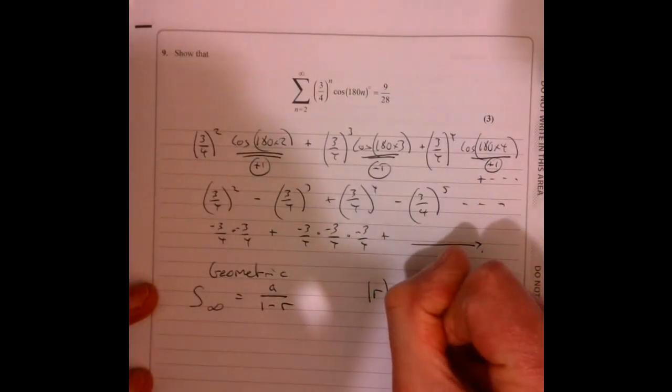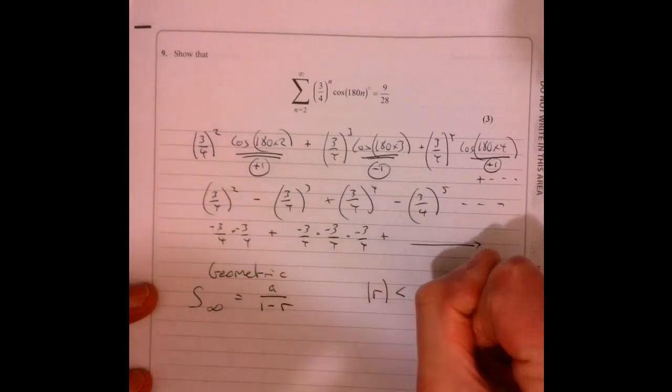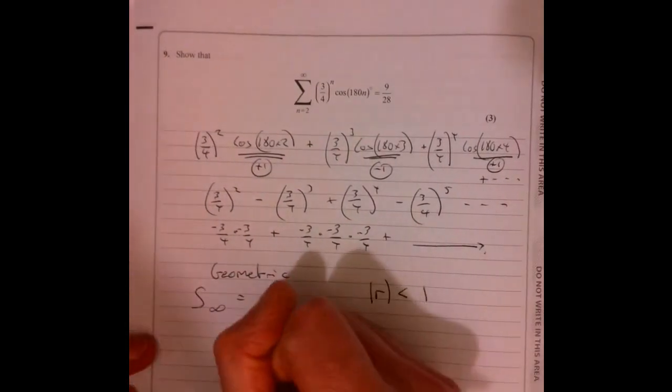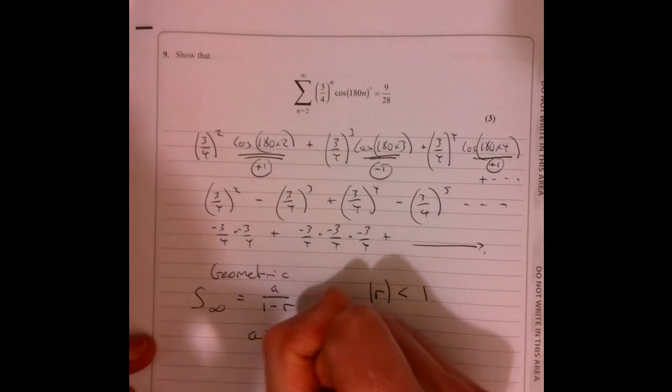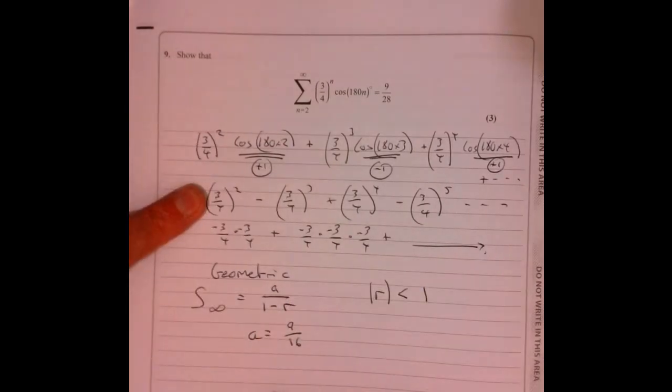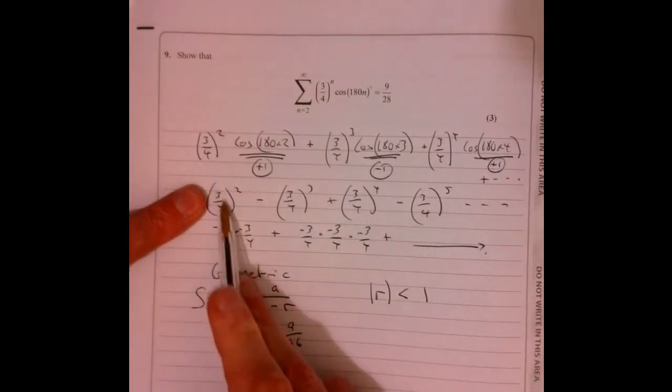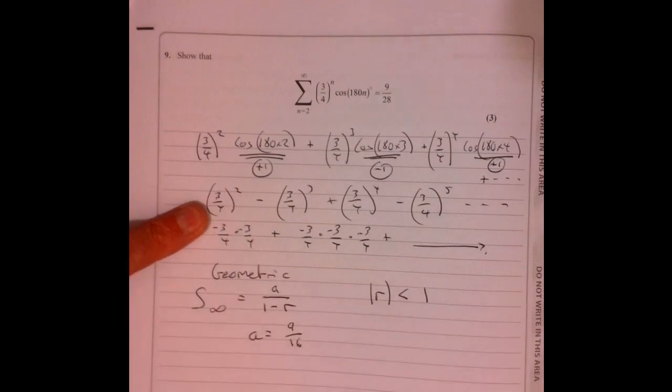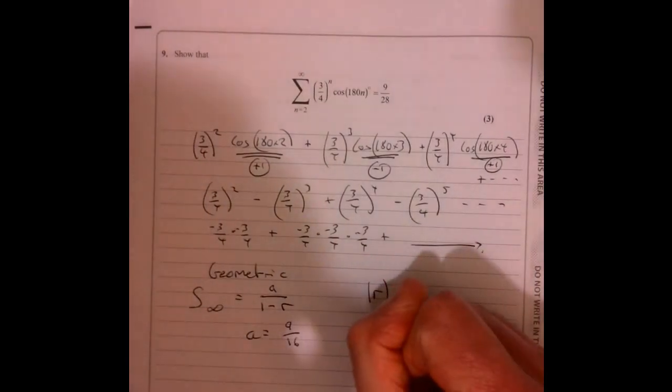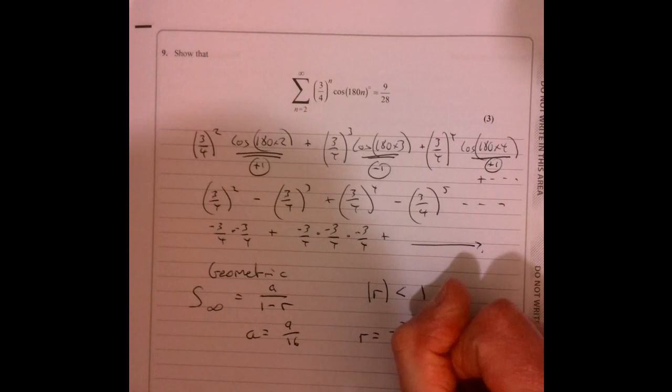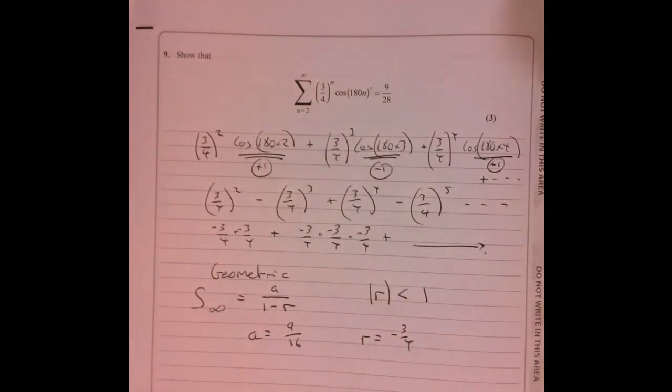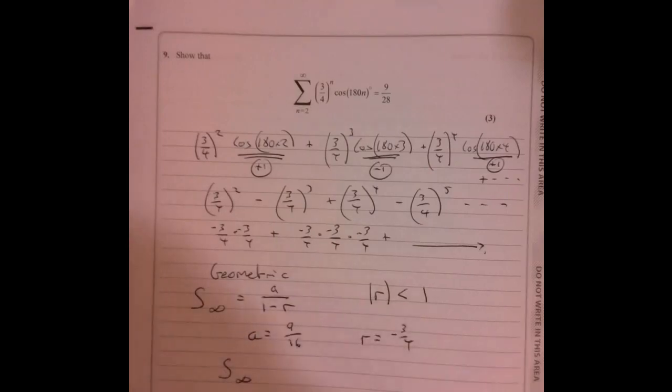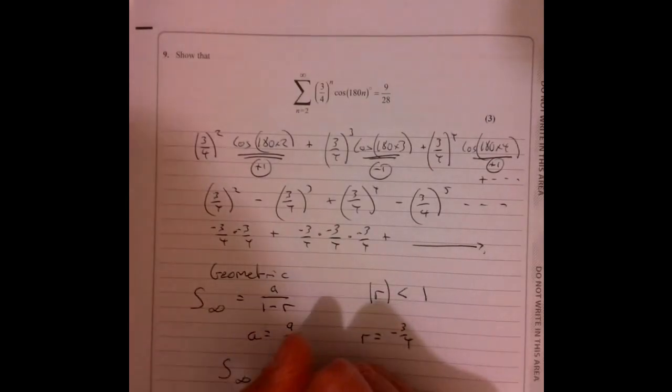Right, let's write down what we know. So a equals nine over sixteen, so that's the first one, that's three over four squared. And then we've got r is equal to minus three over four, so it's being multiplied by each time minus three over four. So substitute those in.